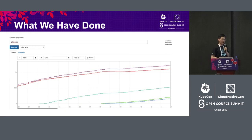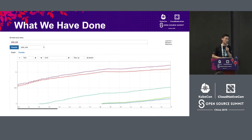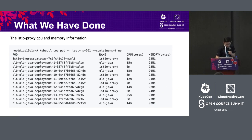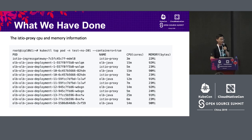Based on namespace isolation, we also looked at the impact on applications themselves — since Istio is non-intrusive to applications. For the Istio proxy sidecar container, CPU consumption is not very high and memory is only around 20 megabytes per sidecar. So if you use Istio, the resource utilization increase is not very high.